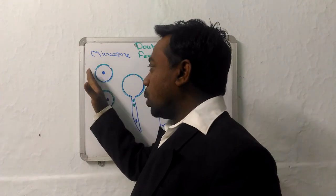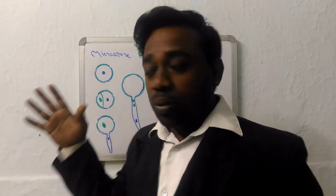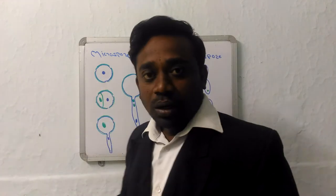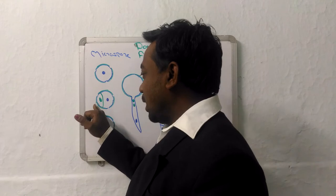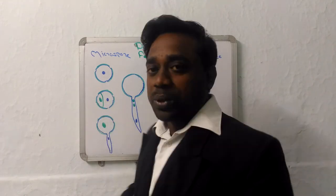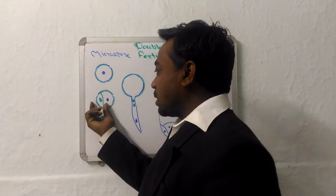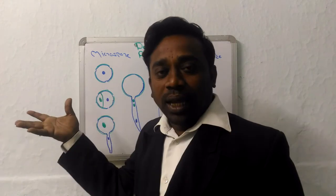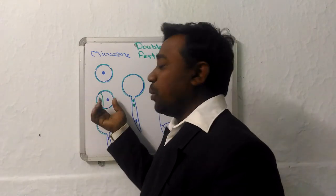First, this microspore undergoes mitosis. From one cell, we have two cells. One will be called generative cell, other will be called tube cell. Now generative cell is smaller in size, tube cell will be larger in size. So in this condition, we have cell within cell.